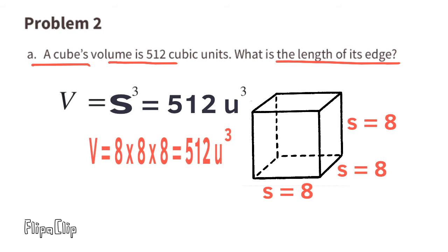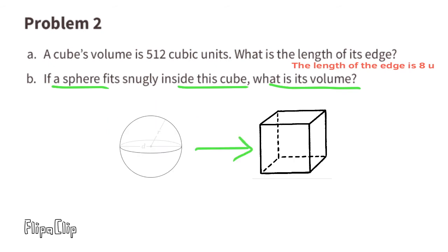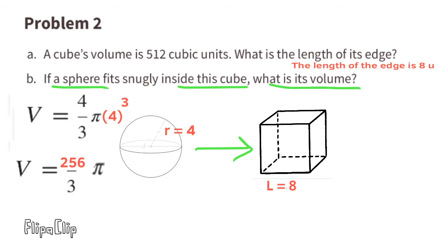Part B: if a sphere fits snugly inside this cube, what is its volume? If the side length of the cube is 8, then the radius of the sphere is 4. Substituting R with 4, we get 4 times 4 to the third power equals 256. So the volume is 256 over 3 times pi units cubed.